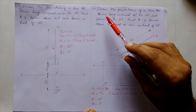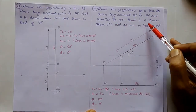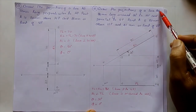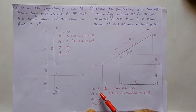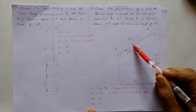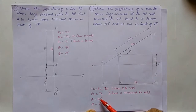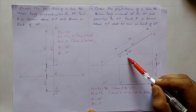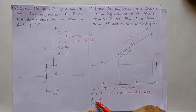Fourth question: draw the projections of a line AB 80 mm long, inclined 30° to HP and parallel to VP. Point A is 20 mm above HP and 40 mm in front of VP. True length of line AB is 80 mm. Since the line is parallel to VP, the elevation length equals the true length — both are 80 mm. The value of theta is 30° — the line is inclined to the horizontal plane.